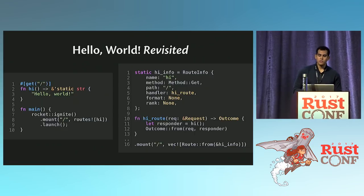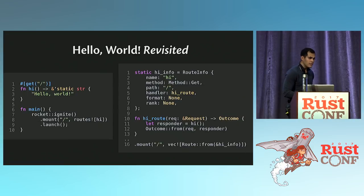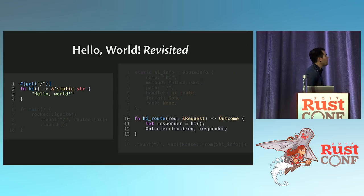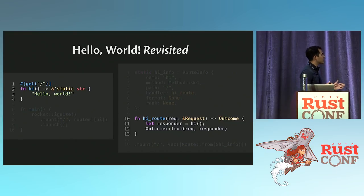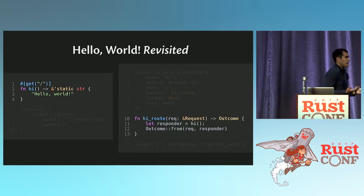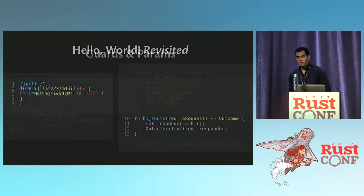Finally, to tie things back together, we have that `routes!` macro in the mount. All we do here is construct a route from the static information that was generated. The `routes!` macro becomes a `Vec`, and the vector contains all the routes you wrote. That is the code that Rocket generates — actually pretty straightforward. The key is this monomorphized function: we can take any signature and convert it into a function with a static type.